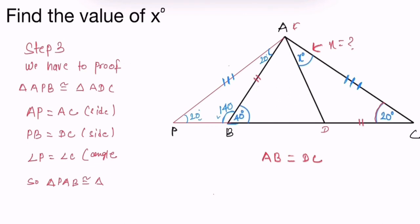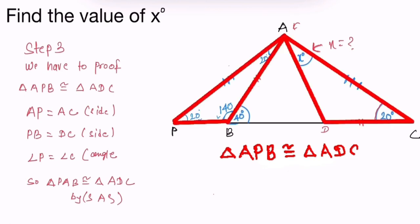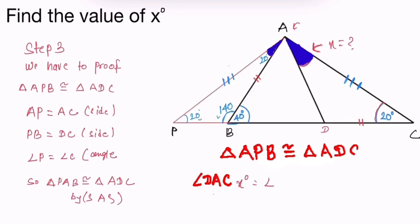By side-angle-side, if both triangles are congruent, triangle APB and triangle ADC, then angle PAB is 20 degrees, equal to X degrees. X degrees is equal to angle PAB.